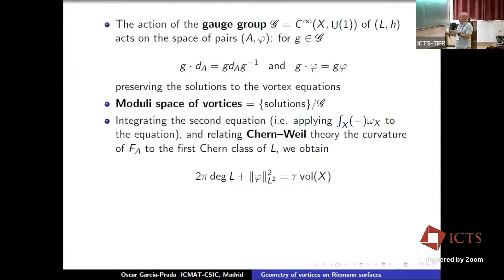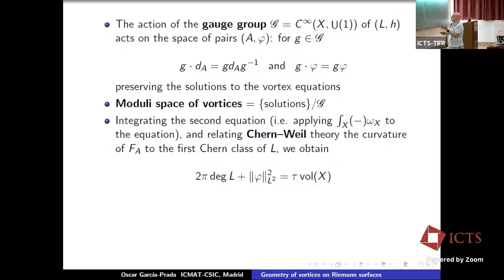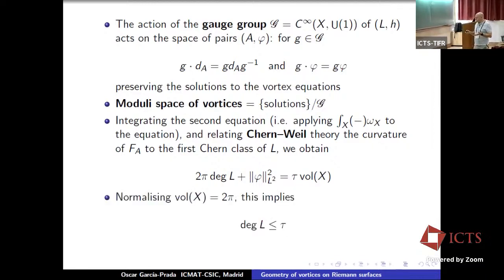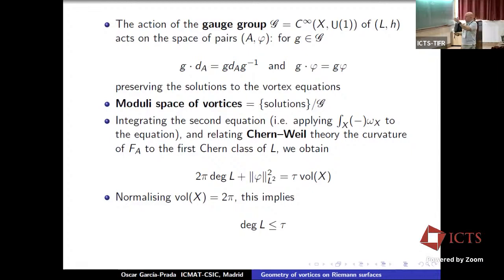If you integrate the second equation and use Chern-Weil theory, as already mentioned in Nuno's talk, this relates to the first Chern class — the degree of L. You get the L² norm of φ, and τ times the volume of X. It is convenient to normalize the volume to 2π, so that this implies: in order to have solutions at all, the degree of L must be less than or equal to τ. This is exactly the inequality Nuno was mentioning.